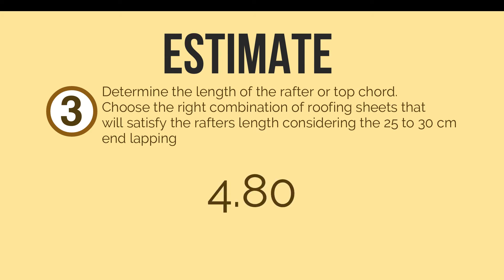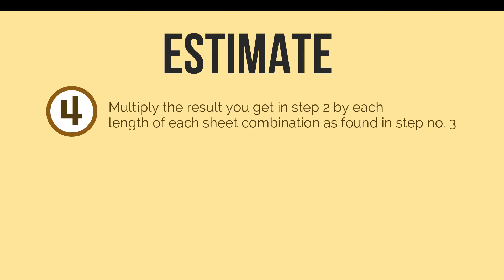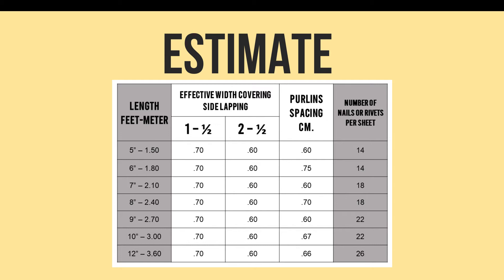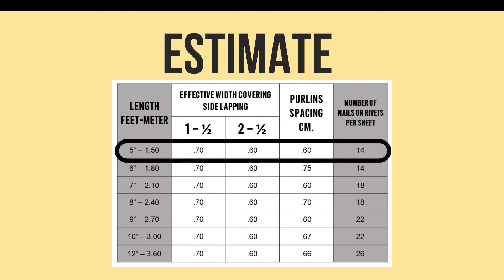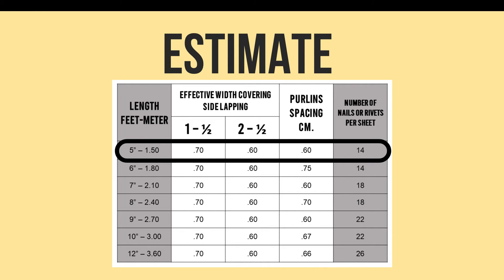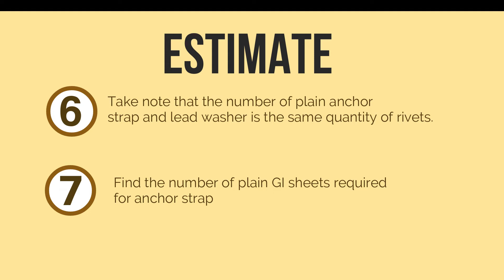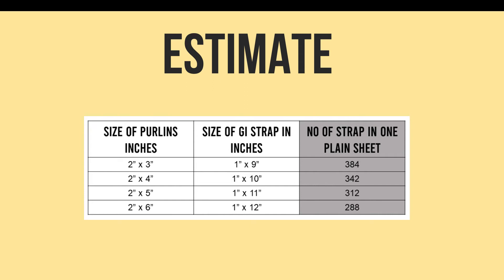For example, with a 4.8-meter rafter, you can use a combination of 3 meters and 2.1 meters length of GI sheets. Step four: multiply the result from step two by each length of the sheet combination found in step three. Step five: determine the number of GI nails, rabbets, and washers in kilograms using the table provided — for 1.5 meters of roofing sheet, there are 14 nails or rabbets. Step six: note that the number of plain anchor strap and lead washer is the same quantity as the rabbets. Step seven: find the number of plain GI sheets required for anchor strap using the table — for 2×3 inch purlins, a 1×9 inch GI strap must be used.